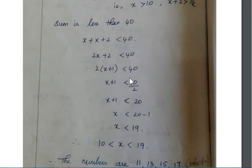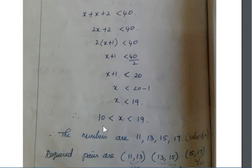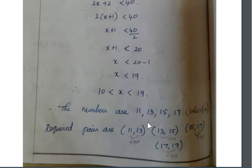So x is less than 19. Here the condition is x is greater than 10. Therefore, the range of x must be 10 to 19. We need two numbers, so the possible values are 11, 13, 15, 17.